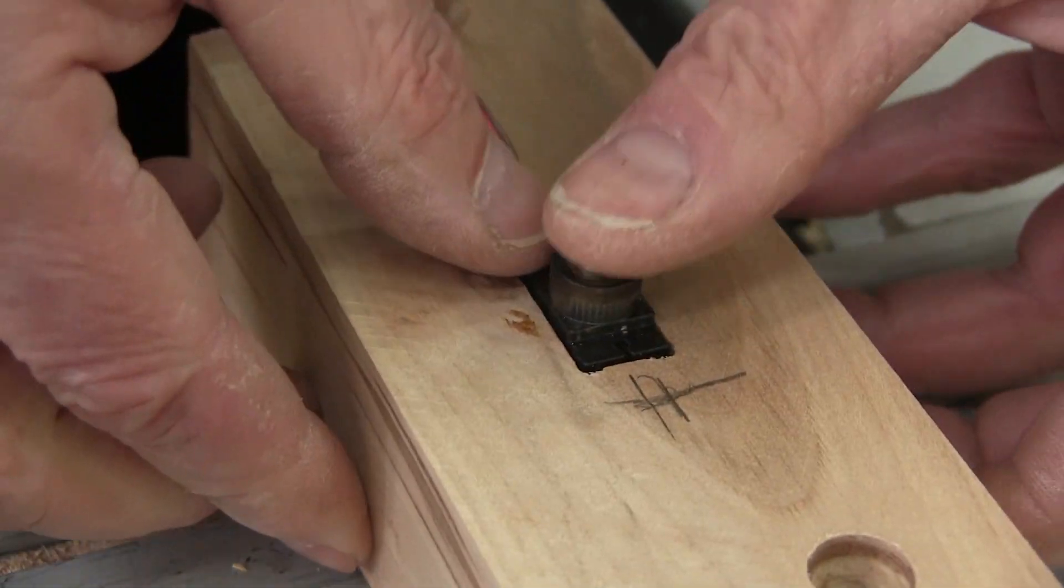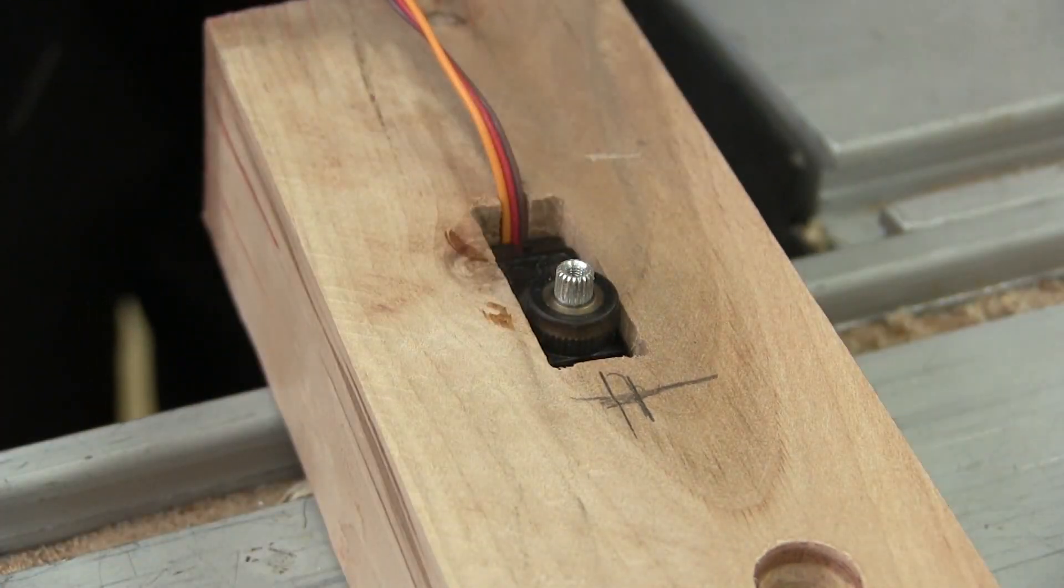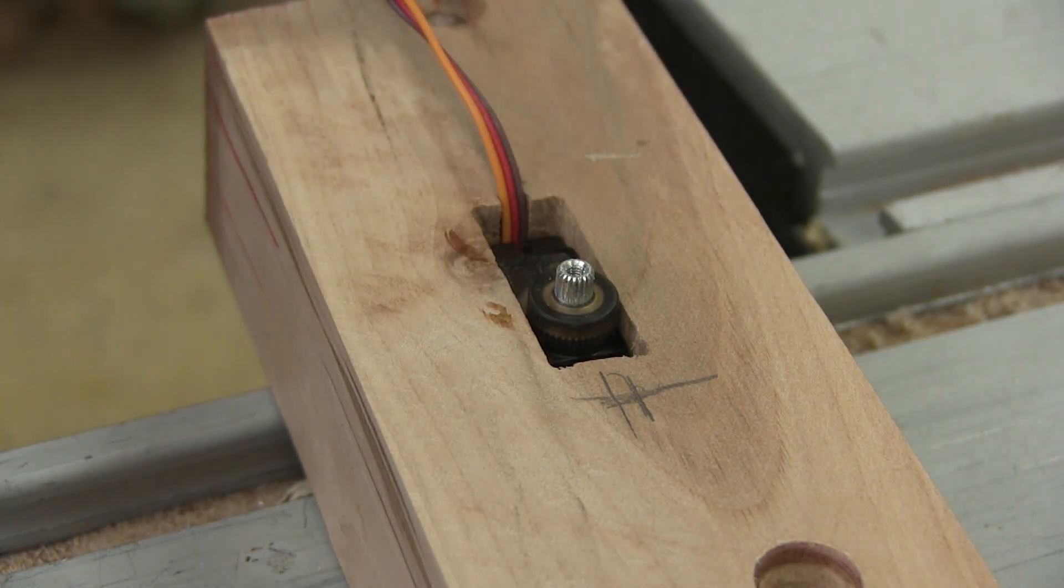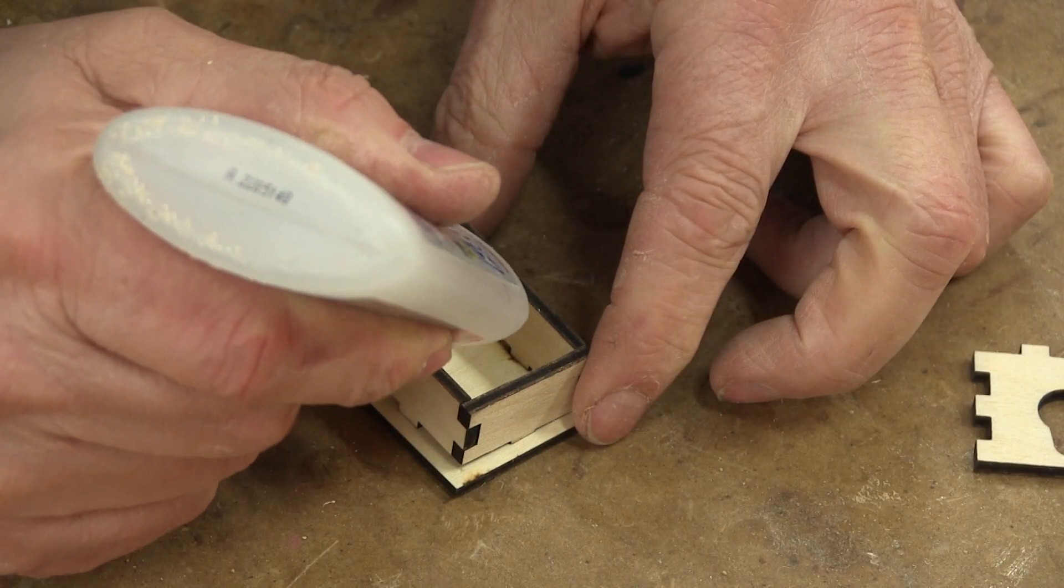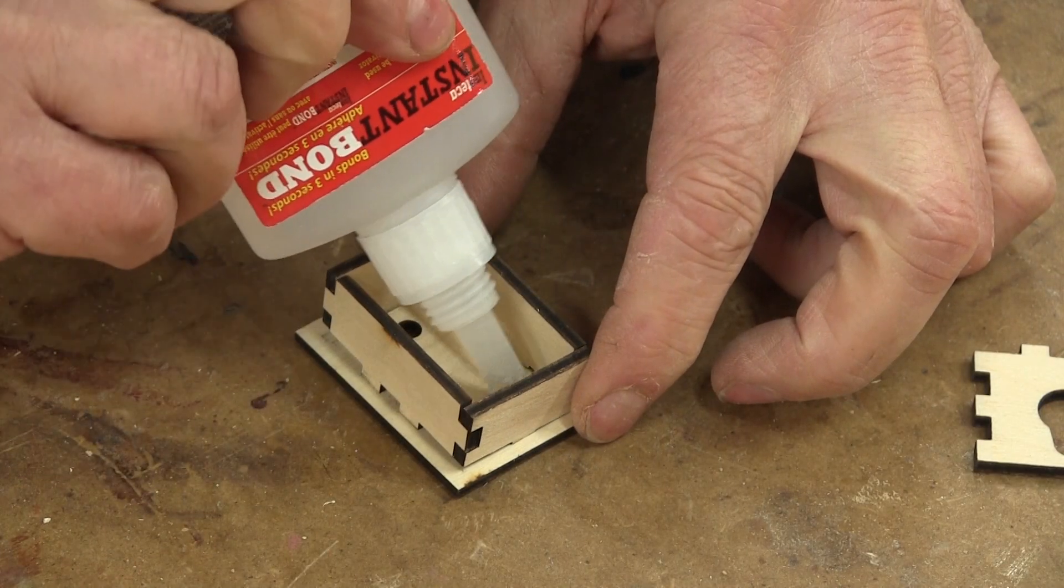Before going any further, I check if the servo fits inside the hole. It's perfect on the first try. This means that I can glue the camera box now.